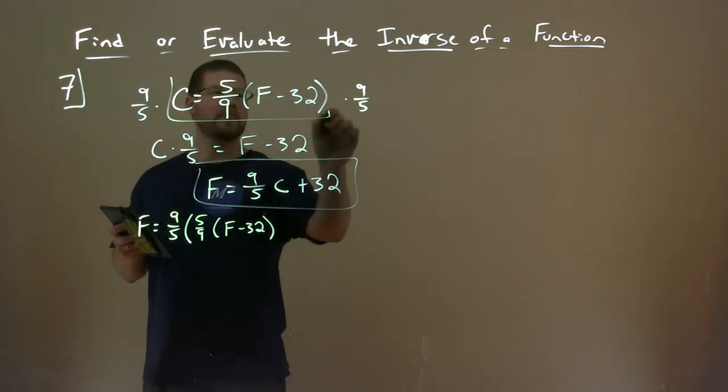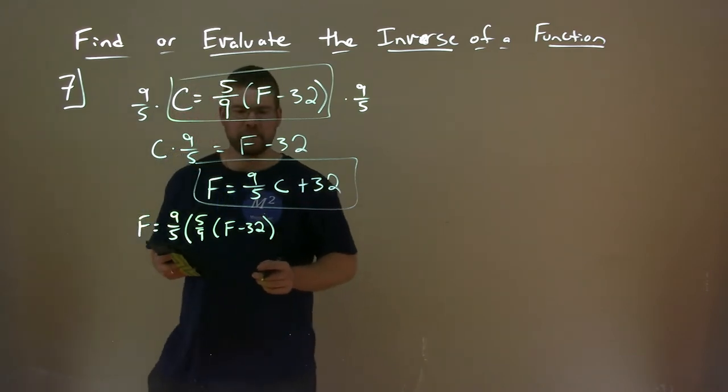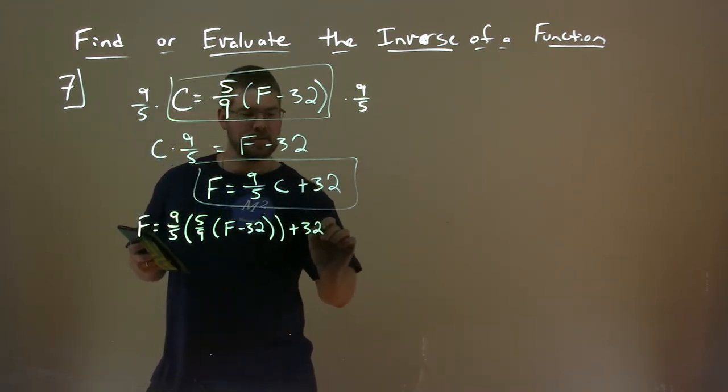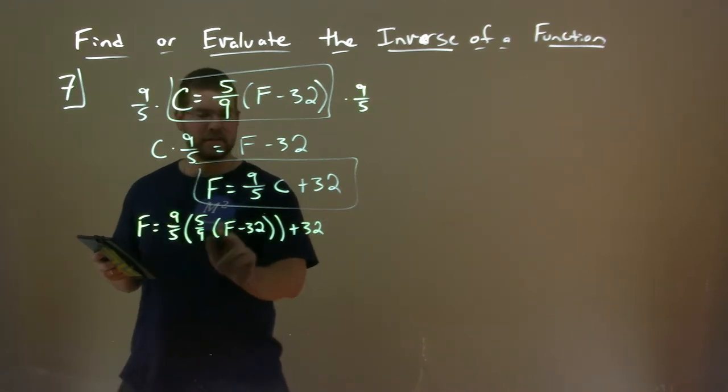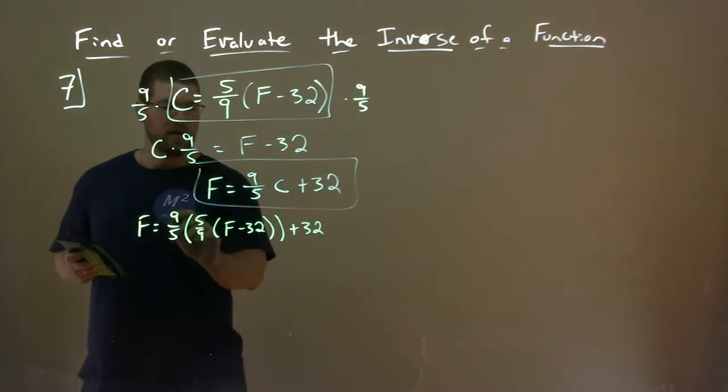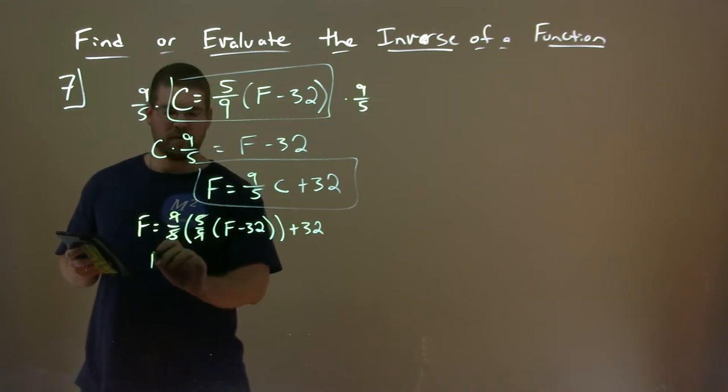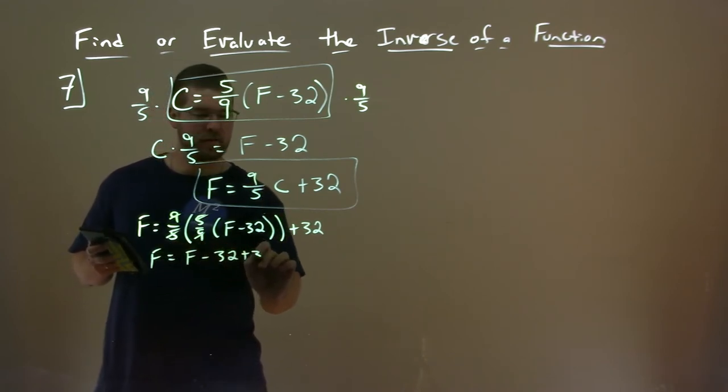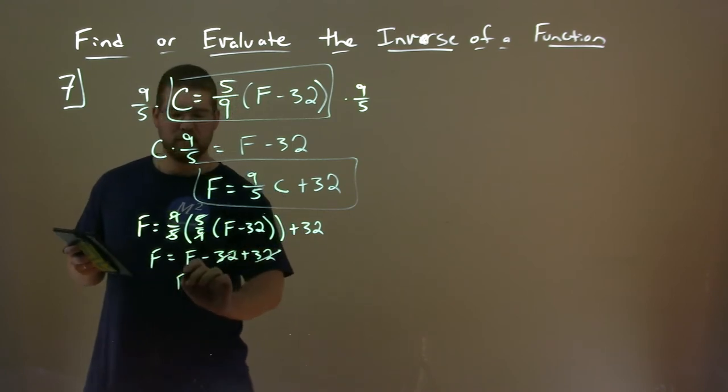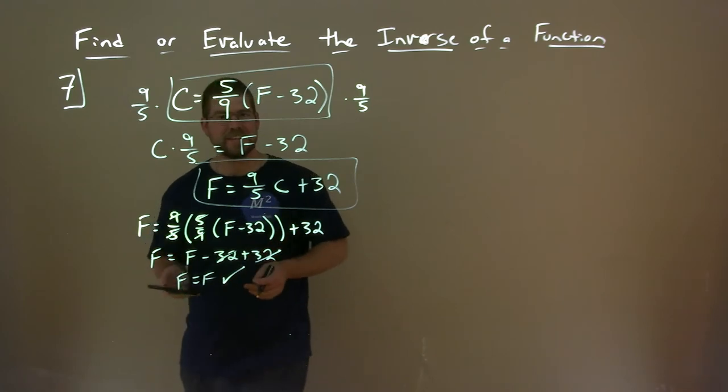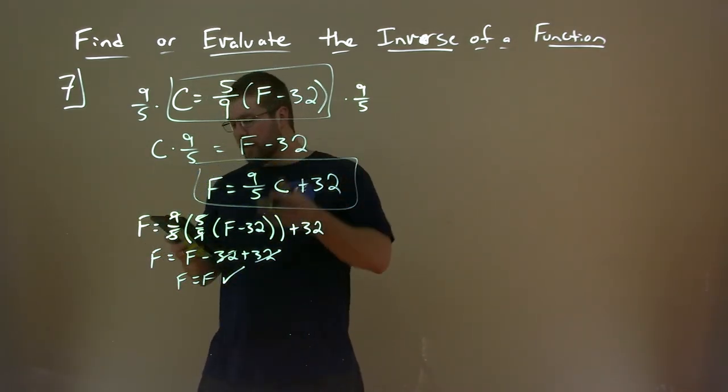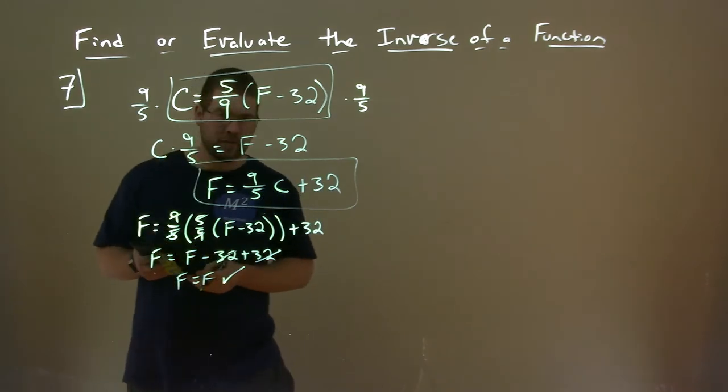So let's see this. Fahrenheit equals 9 fifths times the Celsius function. C is 5 ninths times F minus 32. So, again, that's our Celsius function right here. And then we plus 32. So this is a Fahrenheit function, this is a Celsius function in there. Well, the 9, 5 ninths cancel, and we're left with F equals F minus 32 plus 32. 32s cancel, F equals F. We're good. And verified it is an inverse function there.